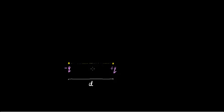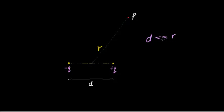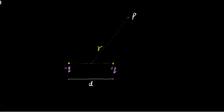What you try to find in cases like this is, at a certain point P at a distance r from the midpoint of the line joining the two charges, the electric field at that point, the electric potential, etc. What we usually assume while solving problems regarding dipoles is that d is much much less than r. It's not that it won't be called a dipole otherwise — it just makes calculations a lot easier.